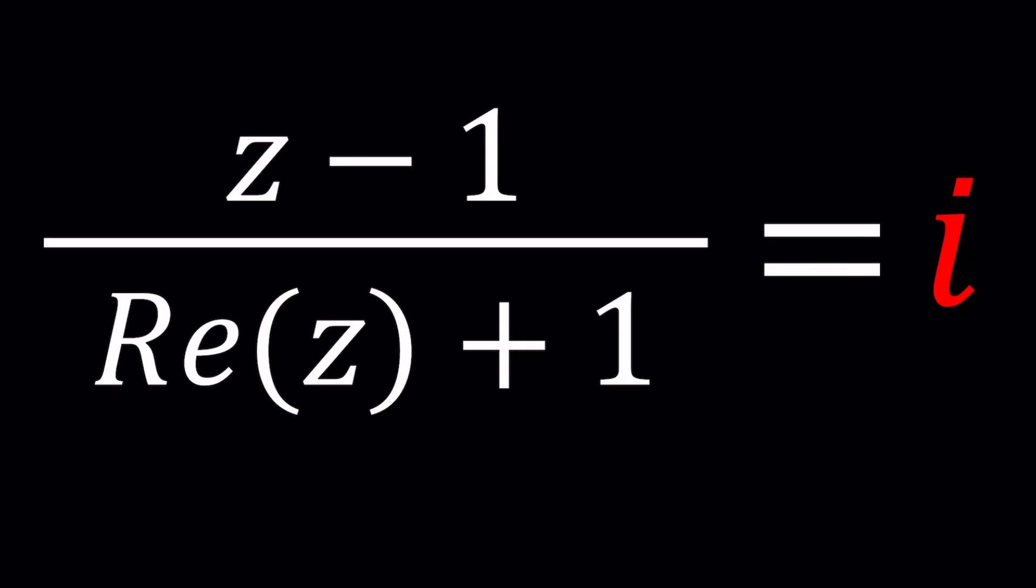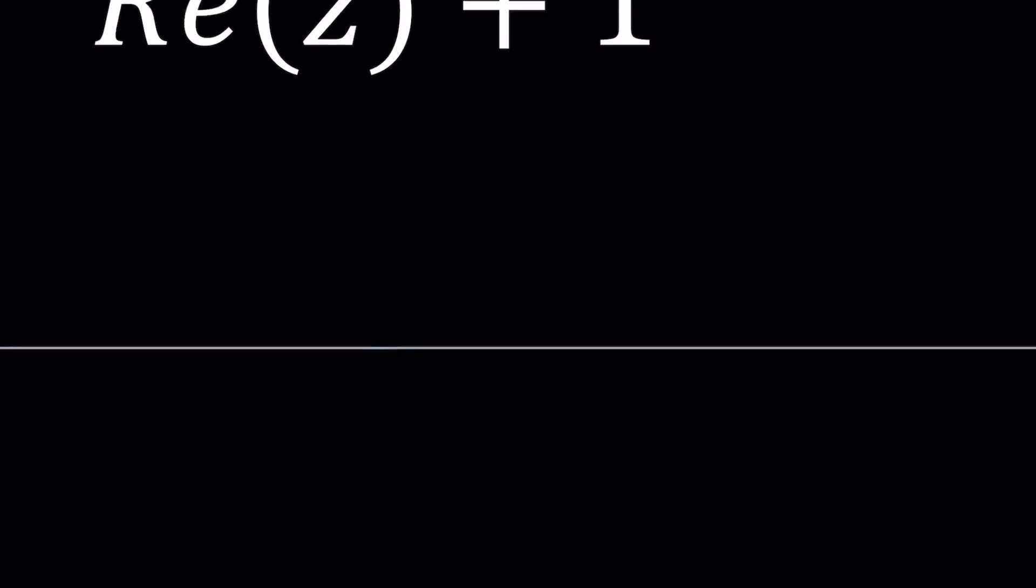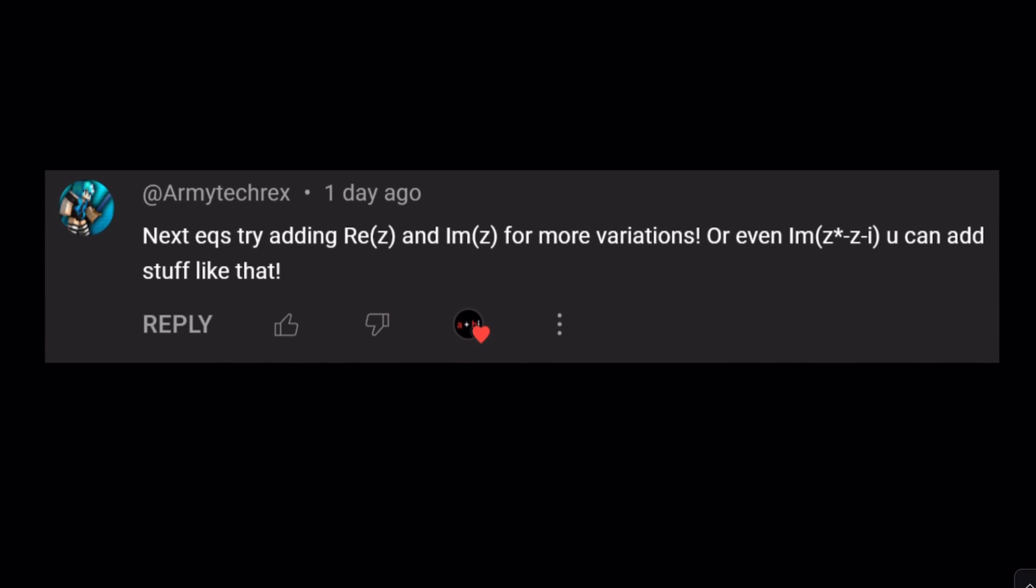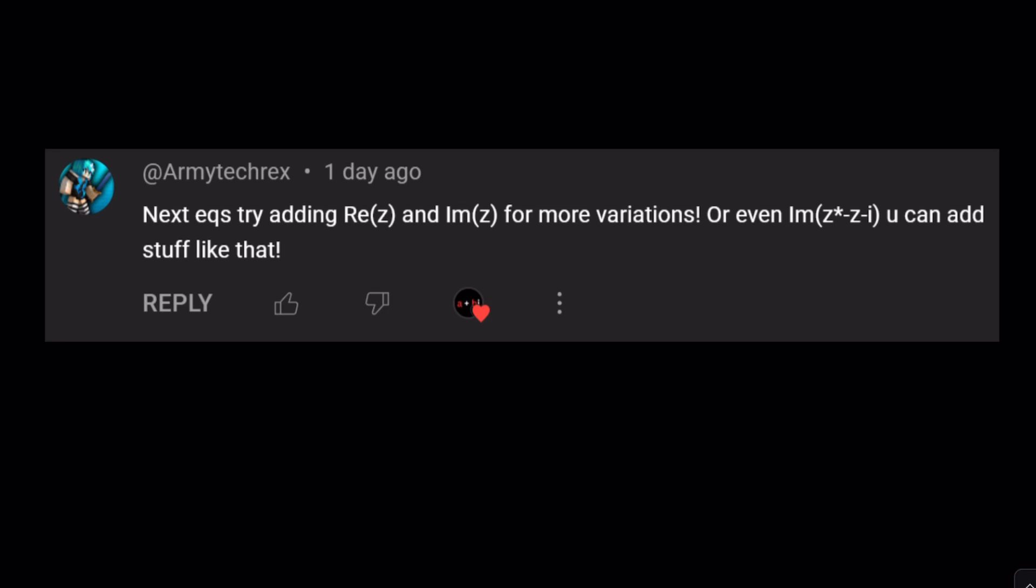Hello everyone, welcome to A plus B I. This channel is all about complex numbers and in this video we're going to be solving an equation with Z and real part of Z. We have Z minus 1 divided by real part of Z plus 1 equals I and we're going to be solving for Z values. This problem was suggested by Army Tech Rex. Thank you for the idea and keep them coming.